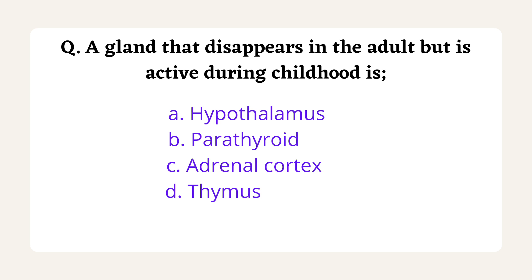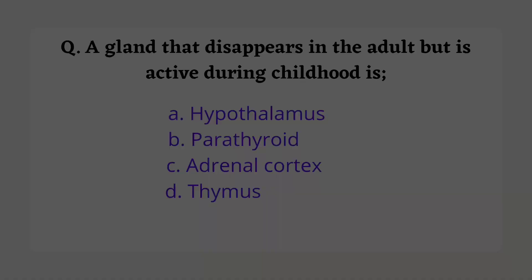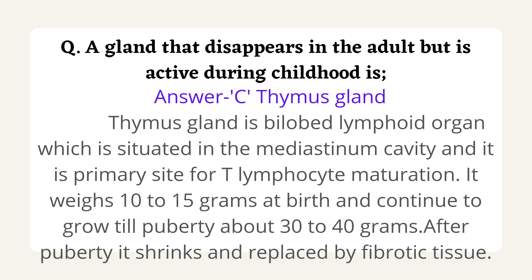The next question is: a gland that disappears in adults but is active during childhood. Options are hypothalamus, parathyroid gland, adrenal cortex, and thymus. This question was asked in UPPSC and UP Steno Exam 2017. The answer is D, thymus gland. The thymus is a bilobed lymphoid organ situated in the mediastinal cavity. It is the primary site for T-lymphocyte activation and secretes thymosin. It weighs 10–15 grams at birth, grows to 30–40 grams until puberty, then shrinks, with only 5–10 grams of tissue remaining in adulthood.